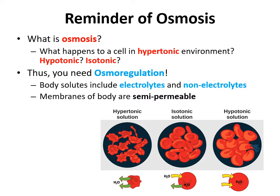Non-electrolytes are solutes that don't break down into ions when dissolved in water. The big example is sugar. Even though sugar dissolves in water, it doesn't break into ions — your body breaks it down through cellular respiration using special processes rather than simple dissolution.